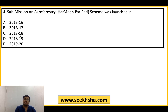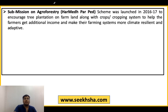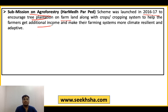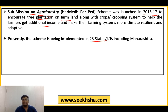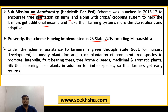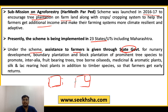Sub-Mission on Agroforestry को 2016-17 में launch किया गया था। इसका main aim था कि farmlands के borders पर या cropping system के अंदर tree plantation को encourage किया जाए — इससे farmers को additional income मिलेगी और environment के लिए भी suitable रहेगी। यह scheme अभी 23 states और UTs में implement हो रही है। इसके अंदर nursery development, block plantation, fruit-bearing trees, oil seeds bearing trees, medicinal and aromatic plants, और silk and lac rearing host plants शामिल हैं।